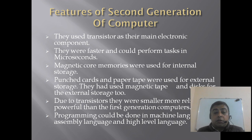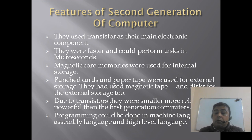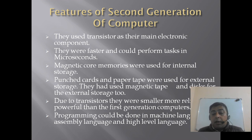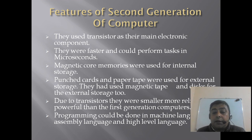Due to the transistor, they were smaller, more reliable and more powerful than the first generation of computers. Programming could be done in machine language, assembly language, and at the end of the second generation, high level languages were also used.